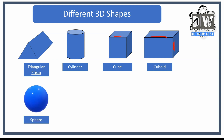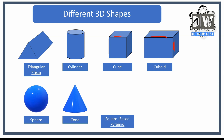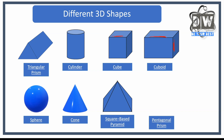We've got a sphere — it's like a ball. We've got a cone, like an ice cream cone. Then we move on to a square-based pyramid. I always think of the pyramids in Egypt — I think those are square-based pyramids as well. It's a square shape at the bottom and then it goes up to a point at the top.